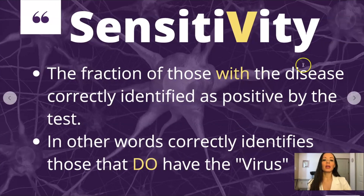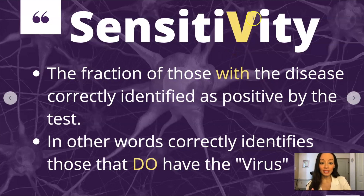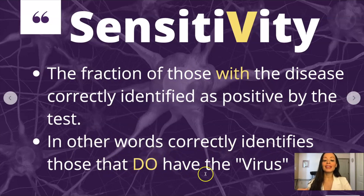I capitalized the V in sensitivity for a very specific reason. Sensitivity is the fraction of those with the disease correctly identified as positive by the test. The V in sensitivity helps me remember that this has to do with those who have the virus — that's how I remember sensitivity. V for 'have the virus.' In other words, the sensitivity of a test correctly identifies those that do have the virus. Sensitivity means the test correctly identifies those that have it.